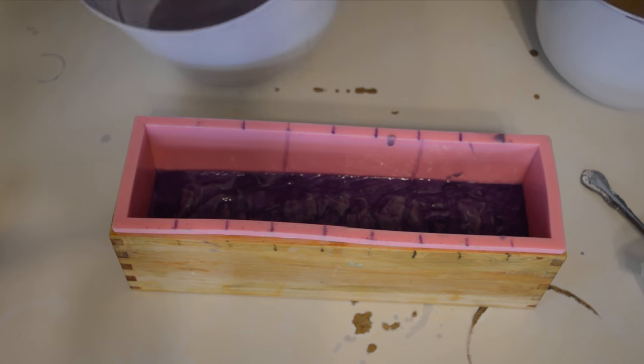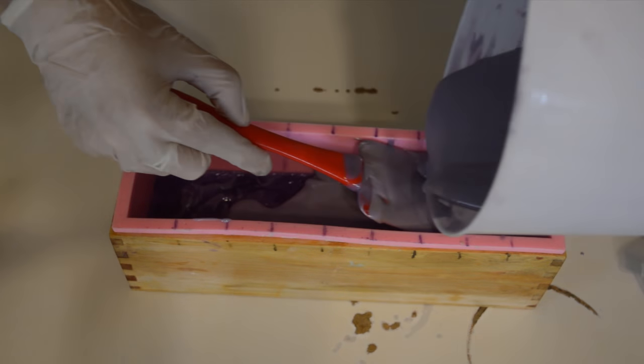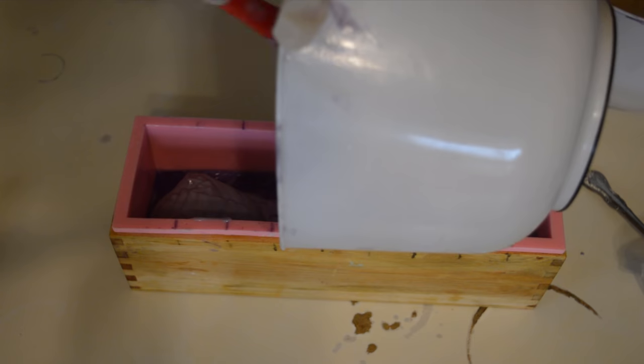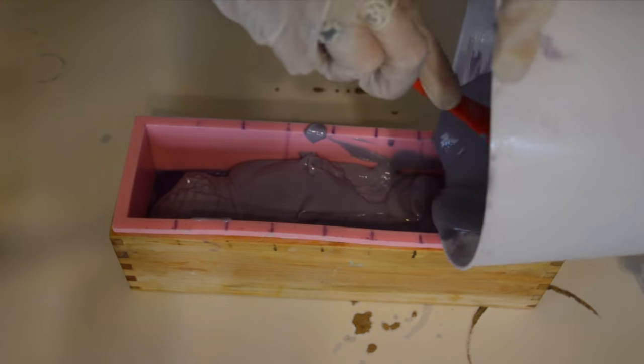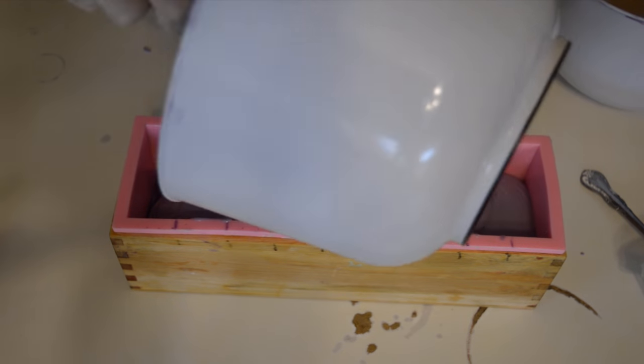Alright, now for the second layer. Just kind of going to put that over top of the spatula. I don't want to break the layer on the bottom of the melt and pour. Scrape this guy out.